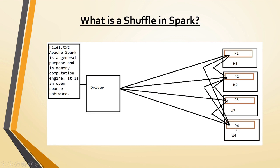That kind of operation increases the data shuffle between partitions, which creates performance problems in the Spark job. There are mechanisms to decide which function to use: for joins, use certain techniques; for counting or aggregations, use specific functions that internally reduce the shuffle operations during computation. The common shuffle operations in Spark are repartition, coalesce, and all the 'ByKey' operations — reduceByKey, groupByKey, sortByKey, aggregateByKey — as well as cogroup and join.